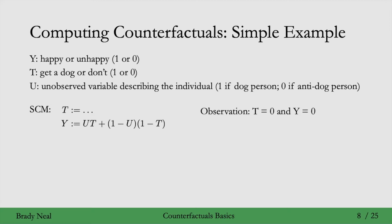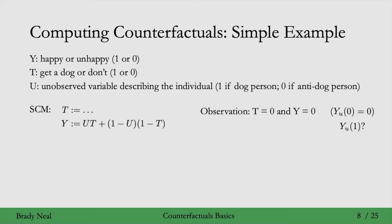We observe that a person does not get a dog and is unhappy. So for this unit where their big U is equal to little u, we know that when they don't take treatment, they are unhappy. So we know this potential outcome — the y_0 potential outcome at the unit level. And we want to know the unit-level counterfactual: what would be this person's happiness if they had gotten a dog? The main thing we'll use here is this structural equation for y — we can solve for the specific value of u for this person, and then use that to get their counterfactual.